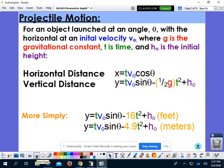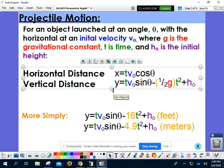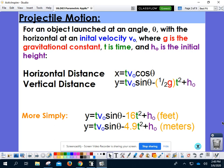Here are the formulas that we use for projectile motion. It looks a little scary, but we break it down quite a bit. It says for an object launched at an angle theta with the horizontal, at an initial velocity v sub zero, where g is the gravitational constant, t is time, and h sub zero is the initial height, here are the two equations that we need to represent the entire set of parametric equations. We have a horizontal distance and a vertical distance, so both an x equals and a y equals equation is what we're looking at today.